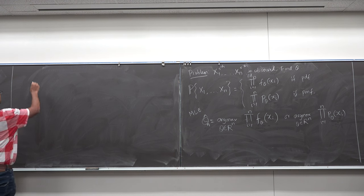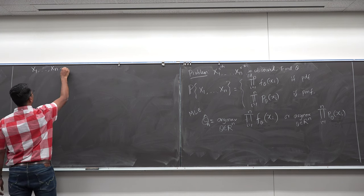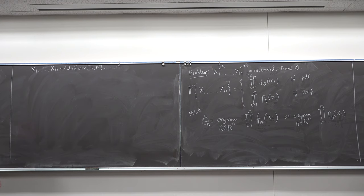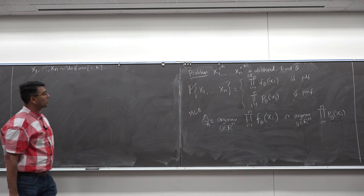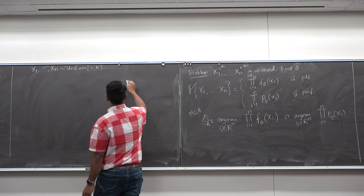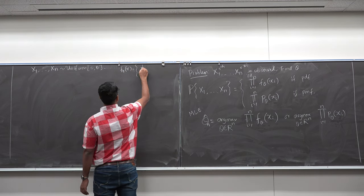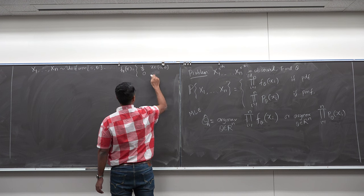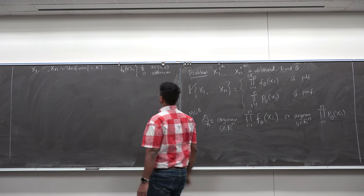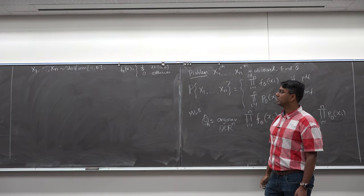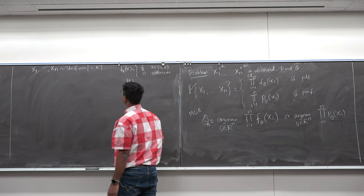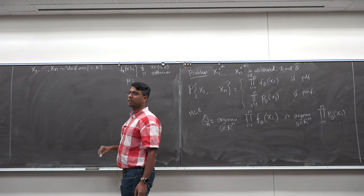Let x1 through xn be drawn from Uniform(0, theta). The PDF is f_theta(x) = 1/theta for x between 0 and theta, and 0 otherwise. The mean of the uniform distribution is theta over 2. I do not know what theta is — it is the parameter of interest — but I am observing x1 through xn. Can anyone suggest a good estimator for theta?